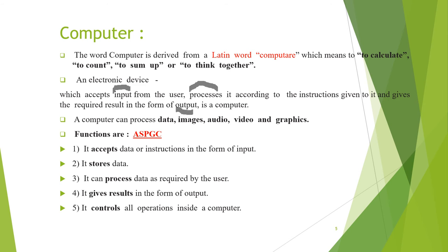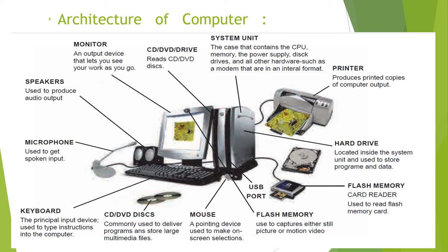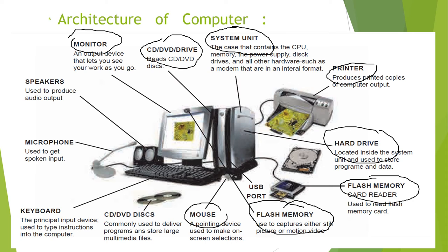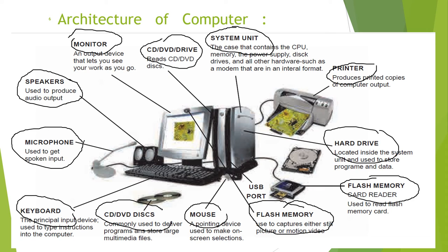This is the architecture of a computer. A computer has different parts: a monitor, CD drive, system unit, printer attached externally, hard disk drives, flash memory card reader, a device to capture pictures, mouse, disks, keyboard, microphone, and speakers to produce audio. These are the main parts attached either externally or built-in. The system unit is the main CPU, and the printer is used to produce output.